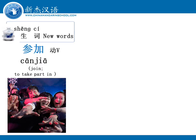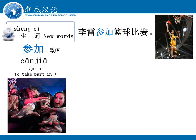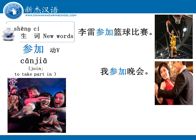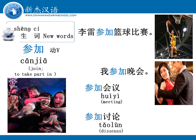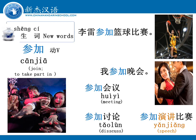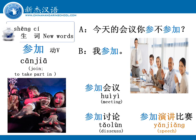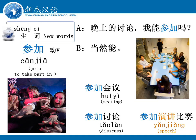李雷有篮球比赛，可以说李雷参加篮球比赛。今晚有晚会，你要去晚会，可以说我参加晚会。还可以说参加会议、参加讨论、参加演讲比赛。 例如，今天的会议你参不参加？我参加。 晚上的讨论我能参加吗？当然能。